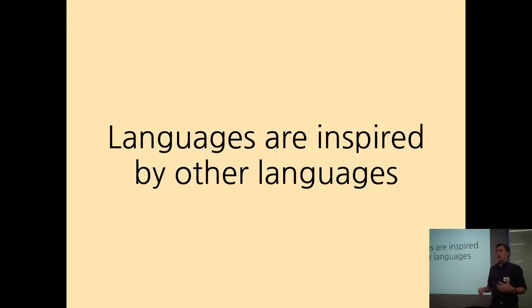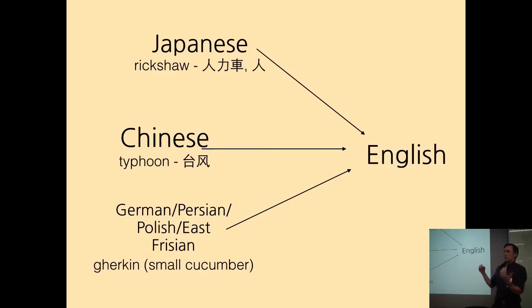All the languages that we're using, be it the spoken languages like English or programming languages, are inspired by others. Every single language that you know has some words, grammar structures, and influence from other languages. So in English, even though it might be difficult to believe, we have some words from Japanese, from Chinese, and even from East Friesian, which is a language from, I don't know, probably Middle East.